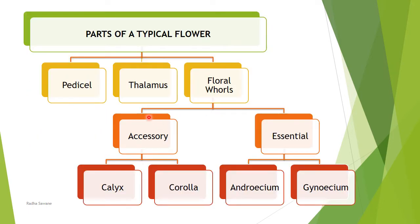A typical flower shows three main parts: pedicel, thalamus, and floral whorls. Floral whorls are the circles of floral leaves, and they are basically classified into two types — accessory whorls and essential whorls. Accessory whorls are two: calyx and corolla. And essential whorls are two: androecium and gynoecium.